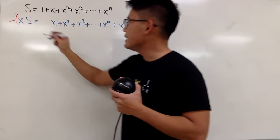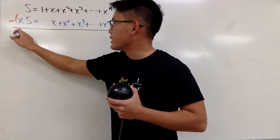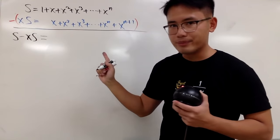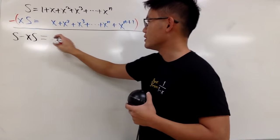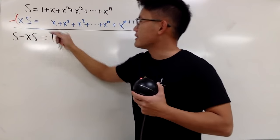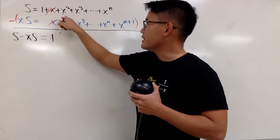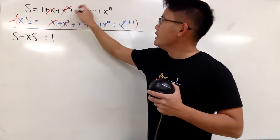And you see that on the left-hand side, we have S minus xS. So let me just put that down, S minus xS. And this is equal to, well, 1 minus nothing. There's no 1 here, so it's just going to be 1. Next, I see that x minus x, they cancel out, right? This and that cancel. And you see that x squared minus x squared cancel. And similarly, this and that will cancel.